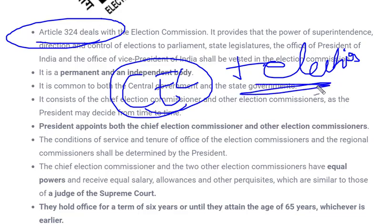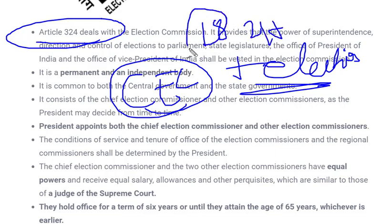Earlier there was only one Chief Election Commissioner, but the number has been increased because of the increasing burden. As you can see, the voting age has been reduced to 18 from 21, so we can see the increase in burden — that is why more Election Commissioners are required.